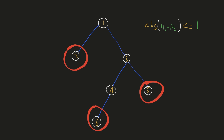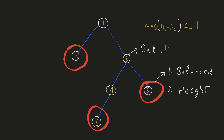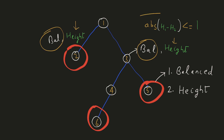This will be a lot easier to compute if in our DFS each node returns two things: the first part should be whether it is balanced or not, and the second part should be the height of the tree. So for checking if the tree is balanced, calling DFS on node 2 and node 3 will return whether they are balanced and their heights. If both of them are balanced and the difference between their heights is at most 1, node 1 will also be balanced.